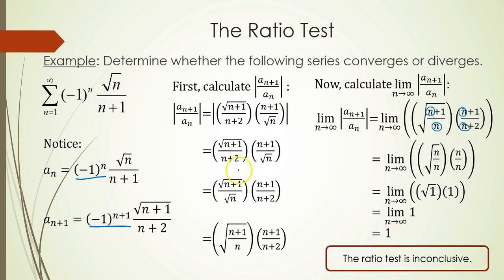This means the ratio test is actually inconclusive. The value of 1 means we can't say anything about the convergence or divergence of this series from the ratio test alone. As a matter of fact, this is an alternating series, so the alternating series test would tell you if it converges or diverges. Thanks for watching.